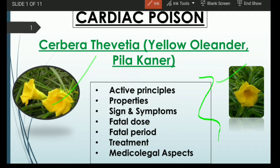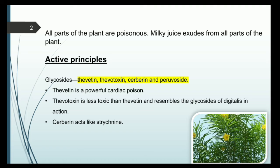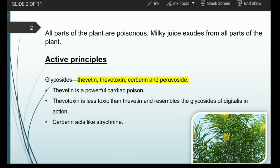Here are some key points to be covered. All portions of this plant are poisonous — the leaf, root, flower, everything is poisonous. This plant also contains a milky juice: when you simply pluck the flower, you can see white milky juice from the plant, and it is equally poisonous as any other part of the plant.